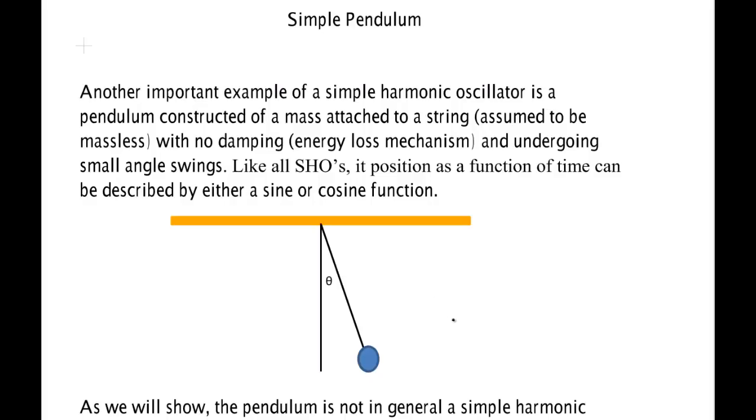We will now look at another historically very important harmonic oscillator, the simple pendulum. This consists of a string attached to a bob with some mass, which we'll call M.